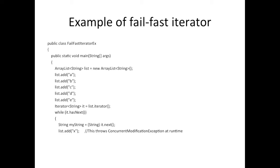As we discussed, whenever a value is being retrieved from the iterator using the next method, the mod count property is checked to see whether it has been altered or not. In this case, since we are trying to add an element to the list, that flag has been modified, so this will throw a ConcurrentModificationException.